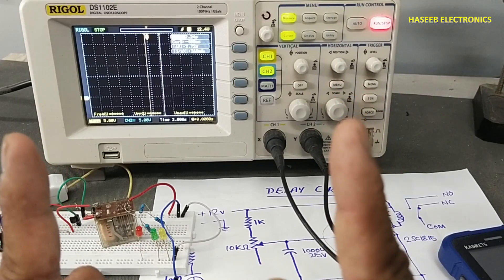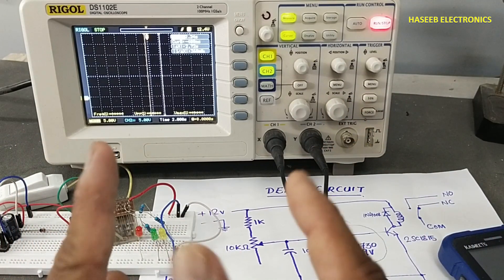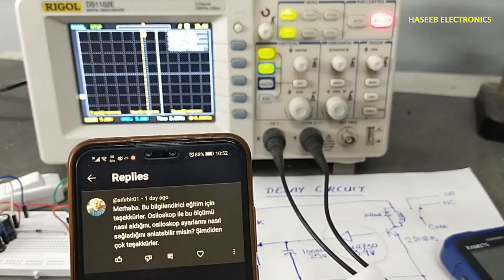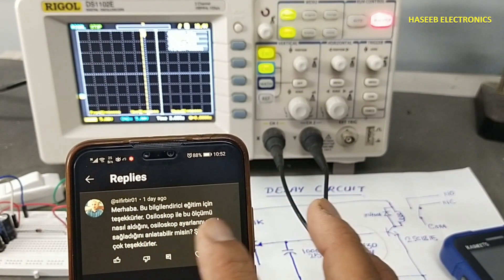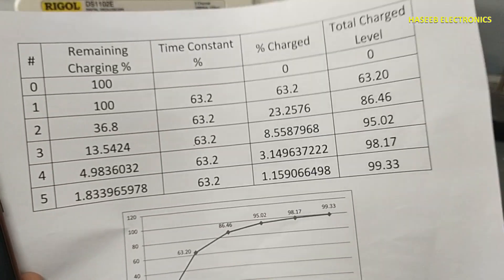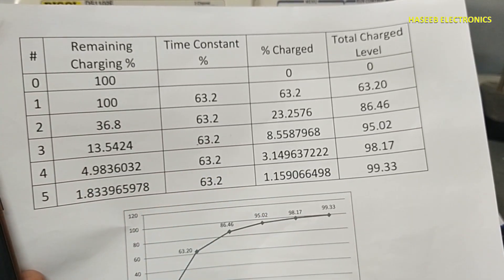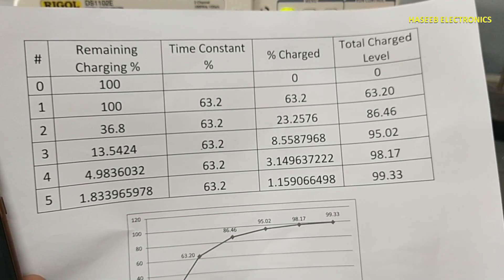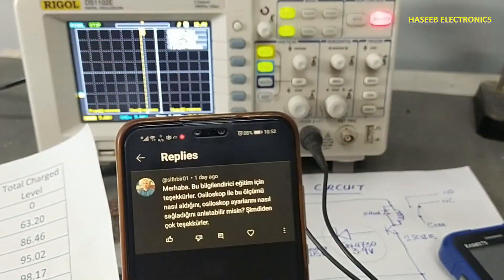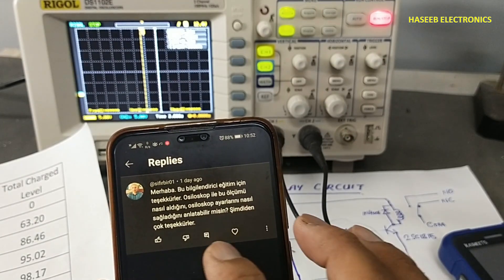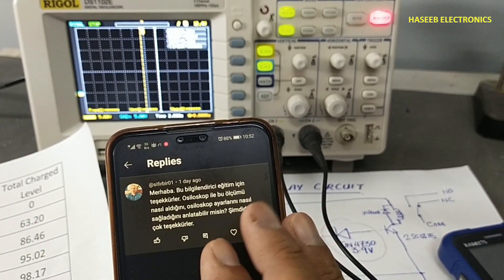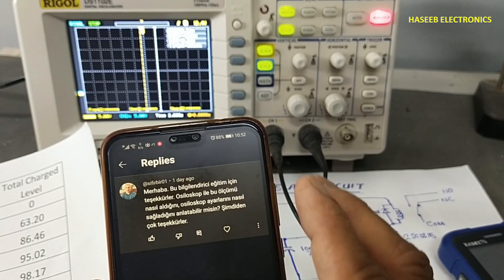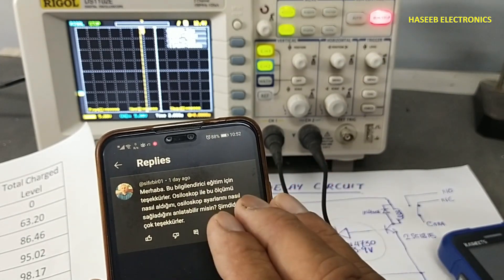Basically, this is a question from my viewer on my last video, which was in Turkish language. I explained the charging time constant of a capacitor RC circuit and I received this comment. My viewer is asking how did I manage to take measurement of that time period, what is the oscilloscope setting.